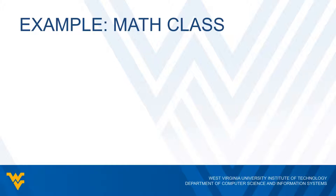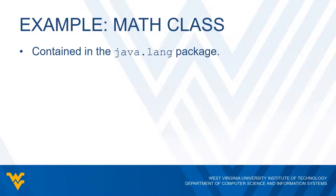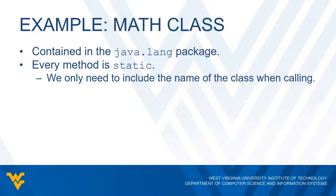Let's take a look at the Math class as an example. We will be talking about several different methods that are part of this class later on, but for now let's look at how the package, the class, and the methods relate to each other. The Math class is part of the java.lang package. As we've already talked about, we don't need to explicitly import this package — when we run a Java program it's given to us by default. Every method in the Math class is static, which means we only need to include the name of the class when we call a method. We don't need to create an object of the Math class or invoke methods on any objects — just the class name and the method we want to call.